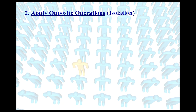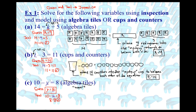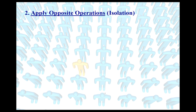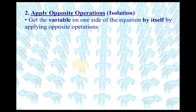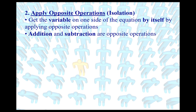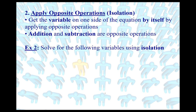Now there's a second method. Even though we can do guess and test, there's a second method that involves applying the operation — using a technique referred to in math as isolation. This is a much more powerful technique once we get into more complicated equations. Eventually we'll reach equations where guess and test won't work, and we'll need other tools. The two opposite operations we'll be concerned with today are addition and subtraction.